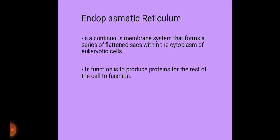And has many other important functions such as protein folding. It is a type of organelle made out of two subunits: rough endoplasmic reticulum and smooth endoplasmic reticulum. The function of endoplasmic reticulum is to produce proteins for the rest of the cell to function.